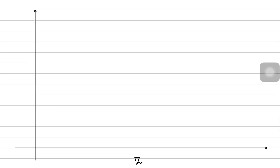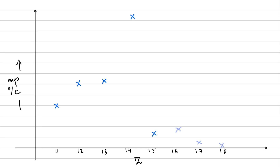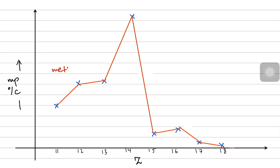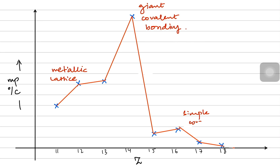In a graphical summary with atomic number on the x-axis and melting point in degrees Celsius on the y-axis, we can see that sodium, magnesium, and aluminium have progressively higher melting points due to metallic lattices with electrostatic attraction. Silicon has the highest melting point of all due to its giant covalent structure with many strong covalent bonds. The remaining non-metals — phosphorus, sulfur, chlorine, and argon — have very low melting points due to weak London dispersion forces. In the next video we'll continue with periodic trends.